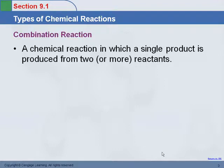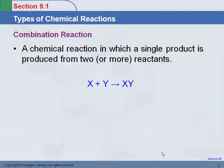First, the combination reaction. In this case, you're starting with elements and producing a compound. Mr. Stoker in your textbook says you can also start with two compounds and produce a compound, and that is true. But when faced on an exam, keep it simple — just start with the elements and go to the compound. These follow the general format of X plus Y goes to XY.